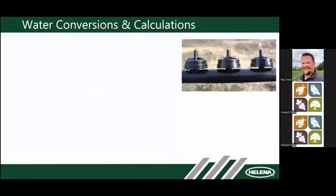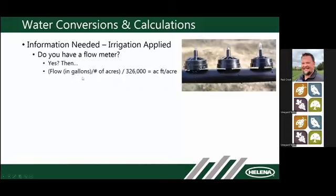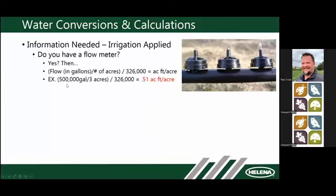What information do we need when calculating applied irrigation? Question one: do you have a flow meter? If yes, the calculation is: flow in gallons divided by number of acres, divided by 326,000, which gives you acre feet per acre — there are 326,000 gallons in an acre foot. For example, if your flow meter reads 500,000 gallons and you have a 3-acre block, divide by 326,000 and you get half an acre foot per acre.